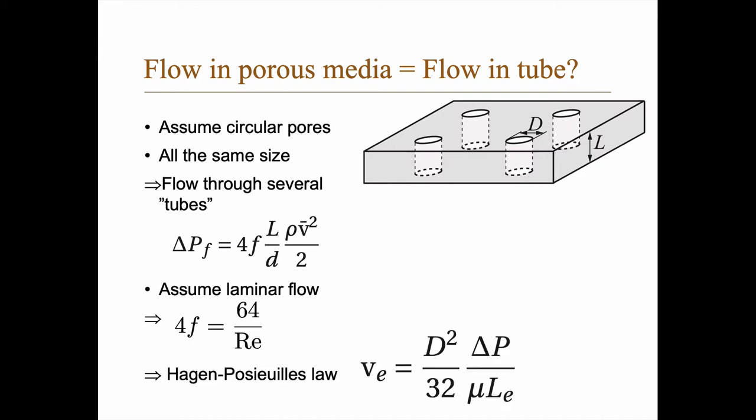And that gives you Hagen-Poiseuille's law if you combine these two equations. So ve = d²/32 × ΔP/(μ×Le). But wait a minute, ve and Le—what is that?